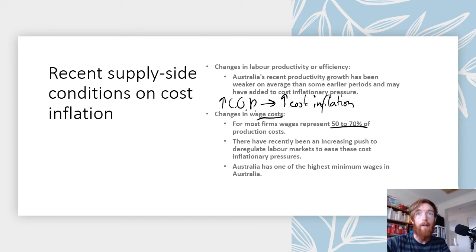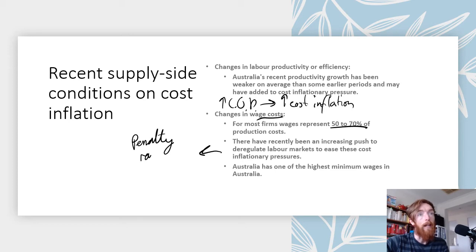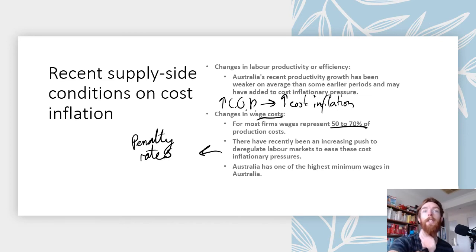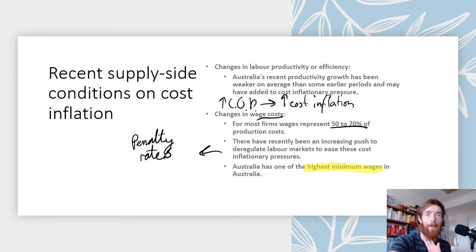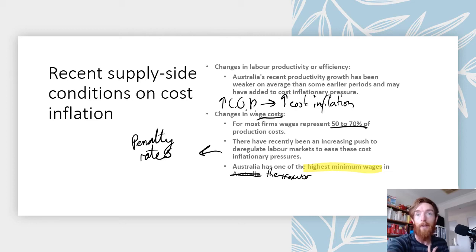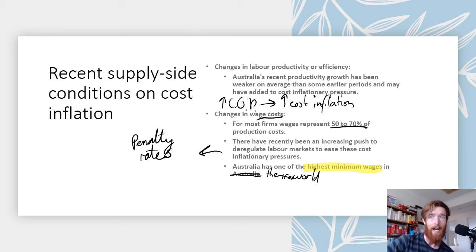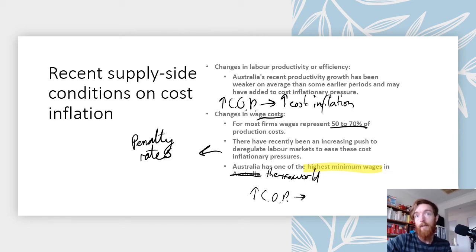Regarding changes in wage costs: wages represent about 50–70% of overall production costs for firms. Recently there's been a push to deregulate labour markets — things like penalty rates have changed in areas like hospitality, reducing pay on public holidays and weekends. That lowers cost of production for businesses, which should lead to lower prices and eased cost inflationary pressures. One issue Australia faces is having one of the highest minimum wages in the world. If wages are high, businesses either won't want to produce in Australia, or if they do, high production costs mean prices will likely be higher, leading to more cost inflation.